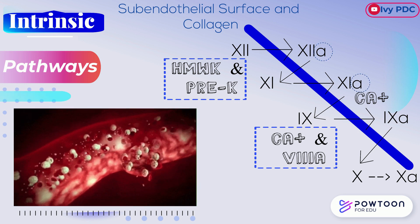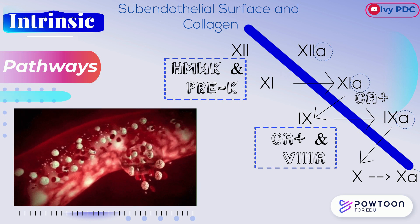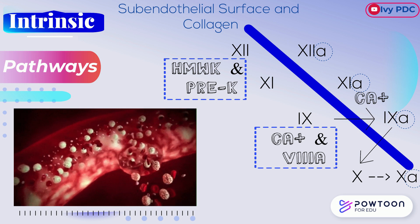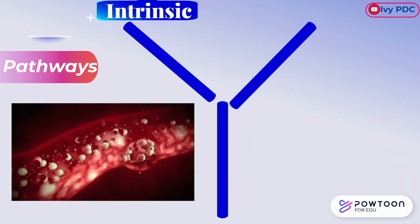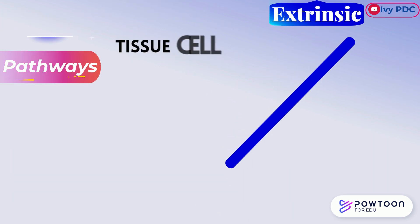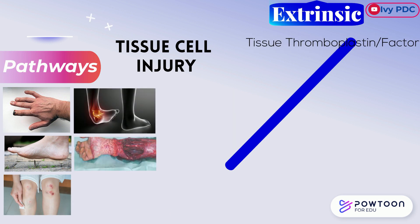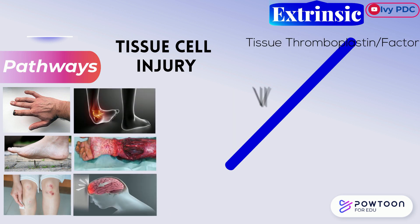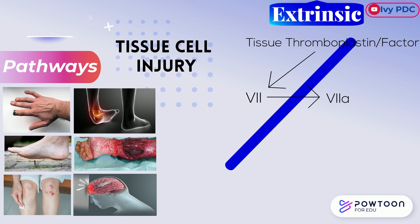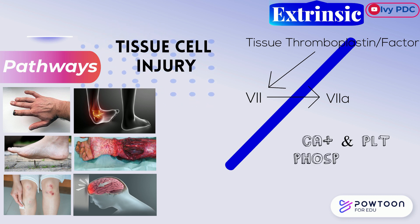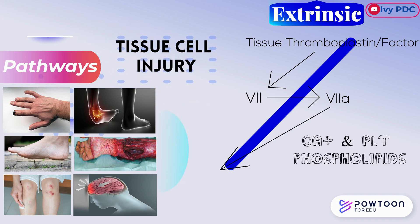The subscript 'a' indicates the activated state of the factor. When a tissue cell is injured, tissue thromboplastin is exposed and activates factor 7 to factor 7a. Factor 7a with calcium and platelet phospholipid activates factor 10 to factor 10a in the common pathway.